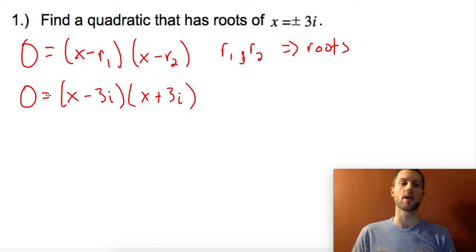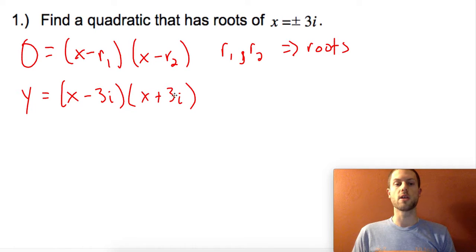Now for the full equation, I'll write it as y = (x - 3i)(x + 3i). I can verify this by setting each factor equal to zero, and I should get the same roots.